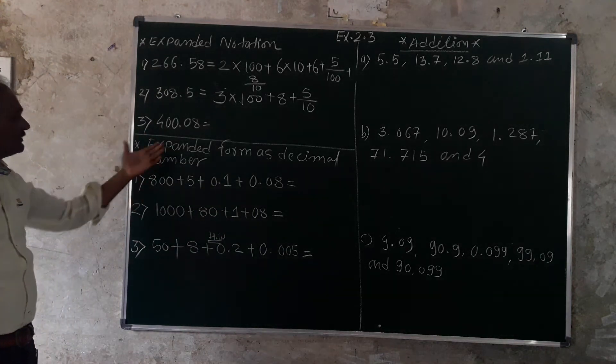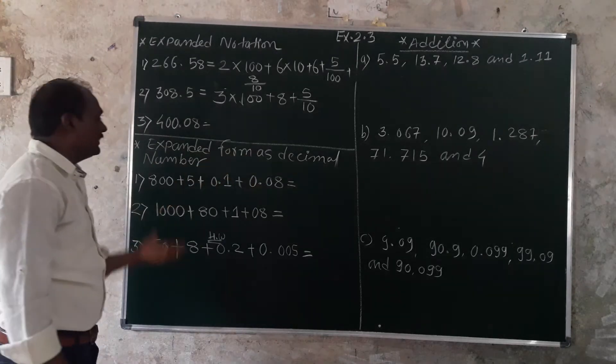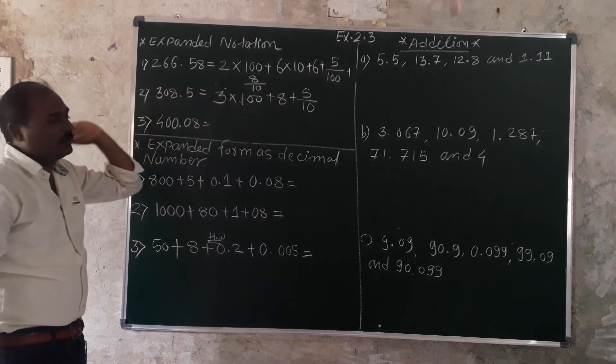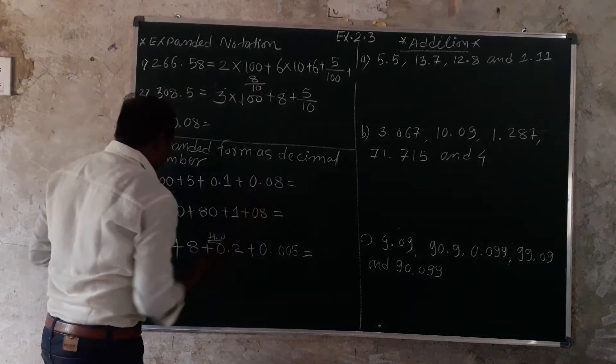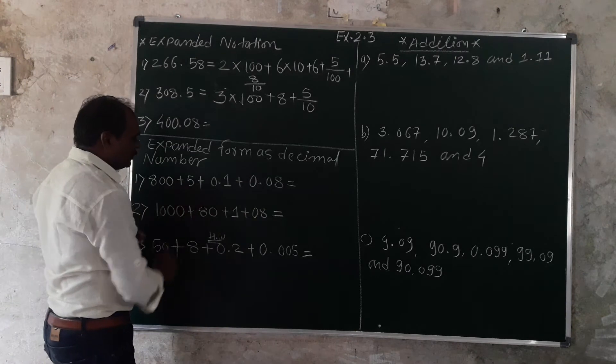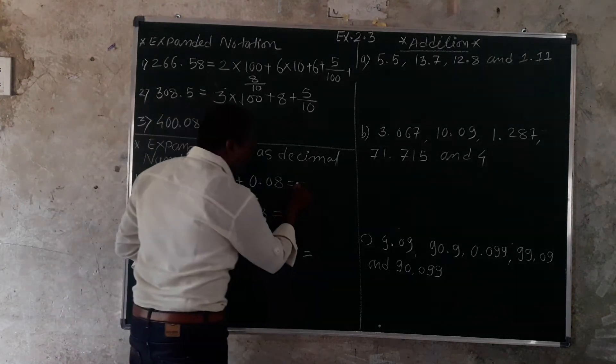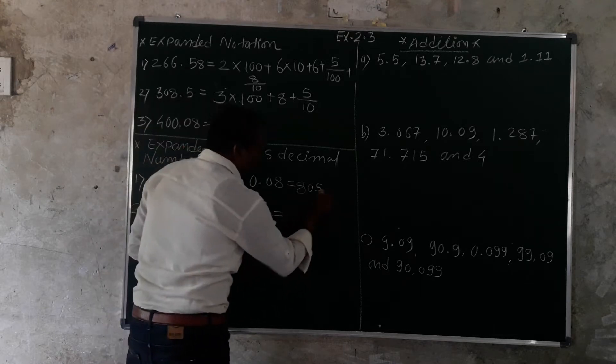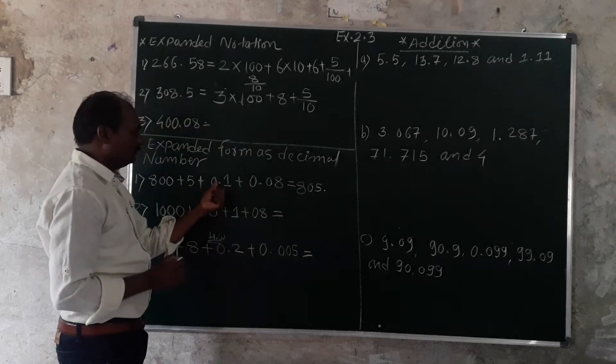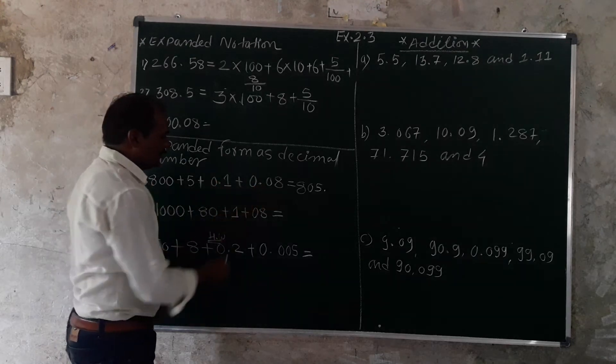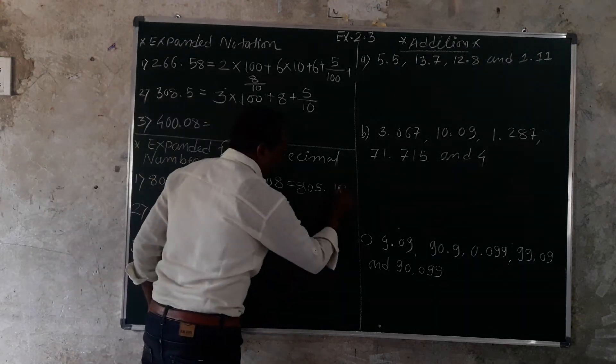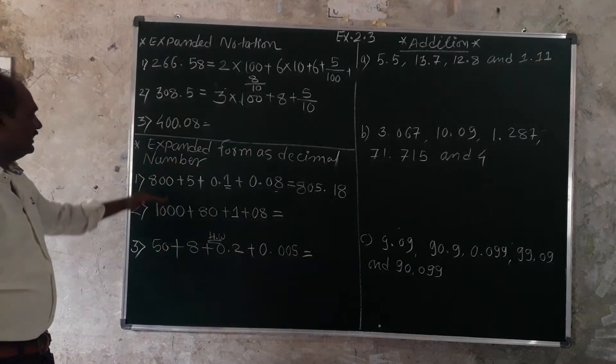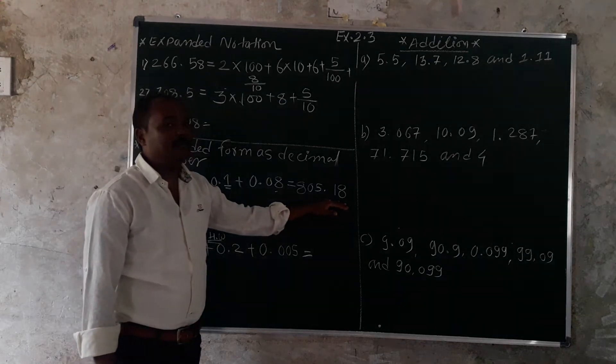Expanded form as a decimal number. Now, expanded form is already given. You have to return to decimal format. So how do you write it? 800 plus 5, it means 805. Then we will start with the decimal point: 1 over 1000 equals 0.001. So this is 805.001. This is the decimal form.